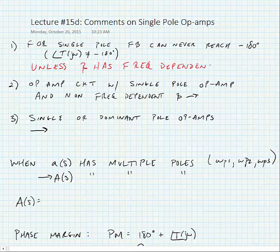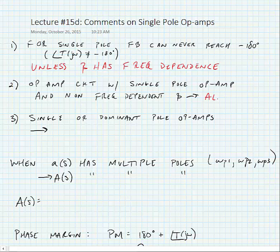Usually beta is just a ratio of resistors, but those resistors can sometimes have parasitics that cause them to have frequency dependence, so we need to be careful about this. An op amp circuit with a single pole op amp and a non-frequency dependent beta is always stable.